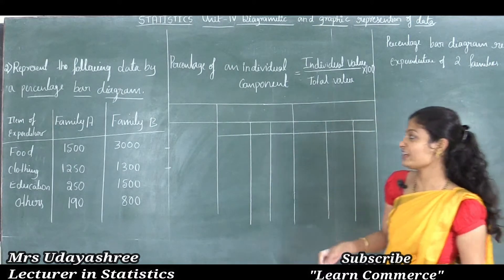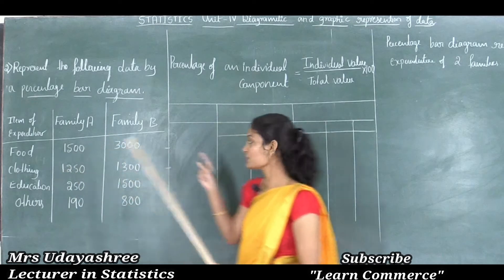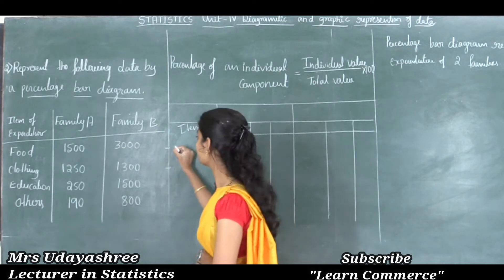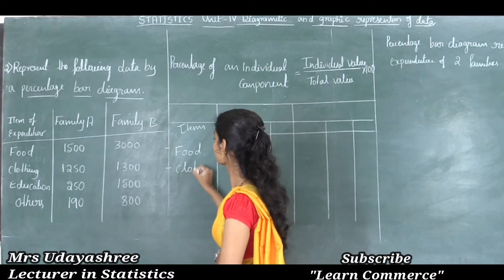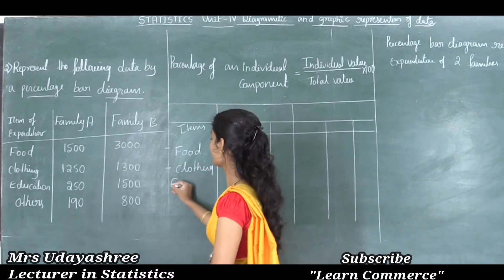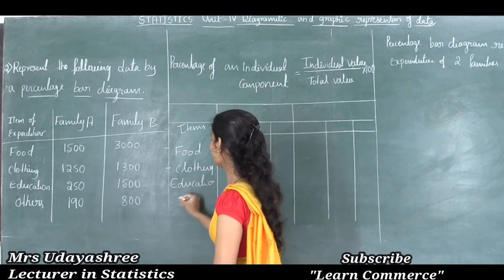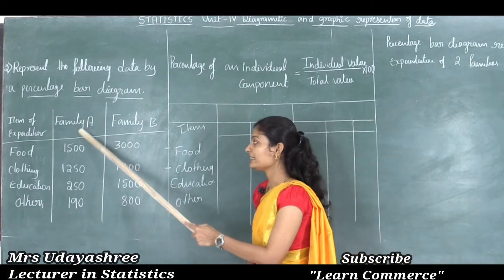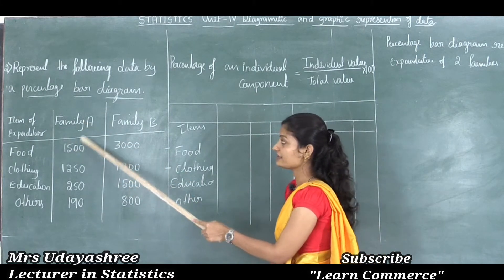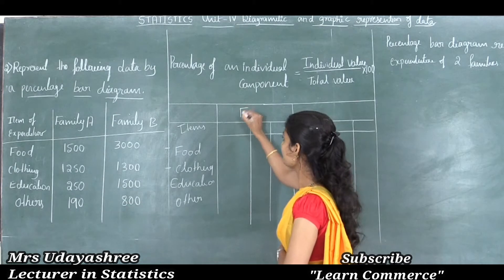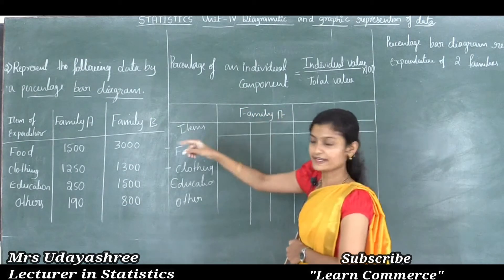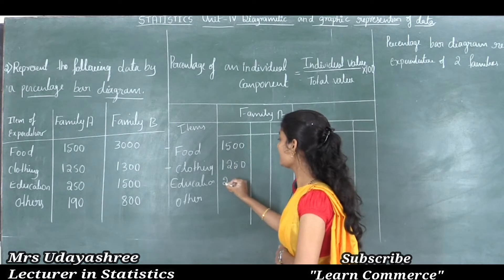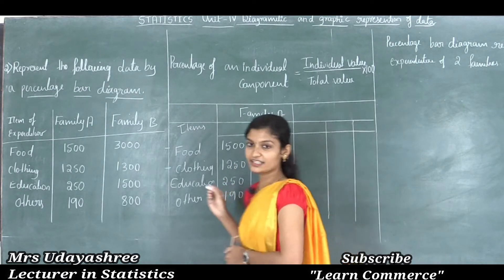Now I will translate the given information into a table. The items are food, clothing, education, and others. First I will convert family A expenditure into percentage. The given expenditures for family A are: food 1500, clothing 1250, education 250, and others 190.